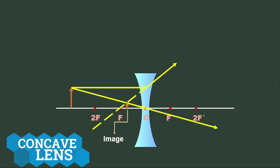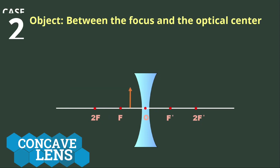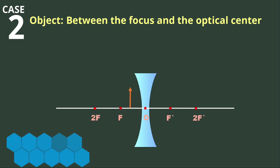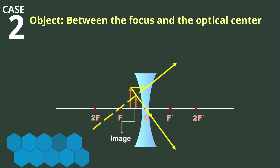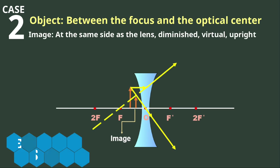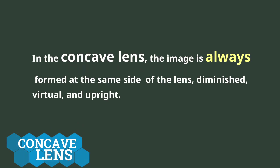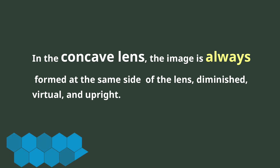When the object is placed closer to the lens, between the focus and the optical center, using Rules 1 and 2, the image is still formed at the same side of the lens, diminished, virtual, and upright. In the concave lens, the image is always formed at the same side of the lens, diminished, virtual, and upright.